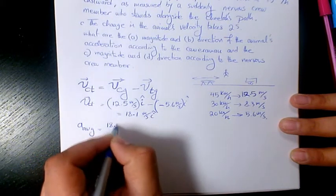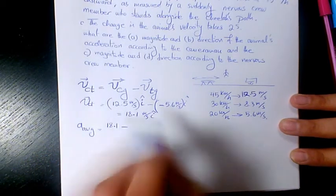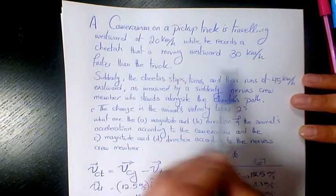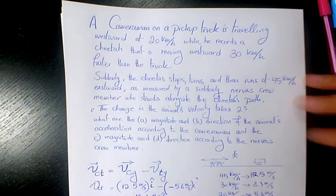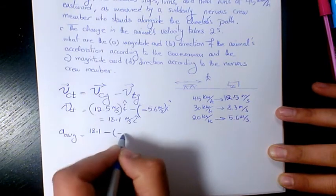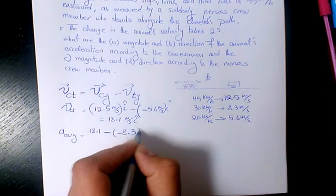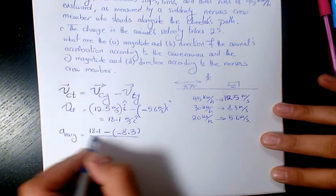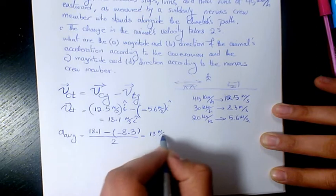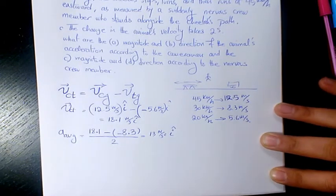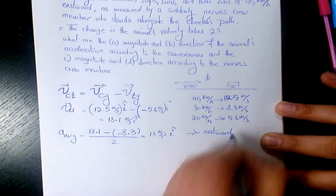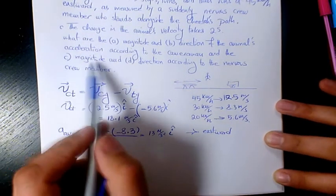Now we find the average acceleration: final minus initial, divided by time. The initial velocity was westward at 30 km/h faster than the truck, which is 8.3 m/s toward west, so negative 8.3 î. So acceleration = (18.1 − (−8.3)) / 2 seconds = 13 m/s² in the î direction, meaning eastward.